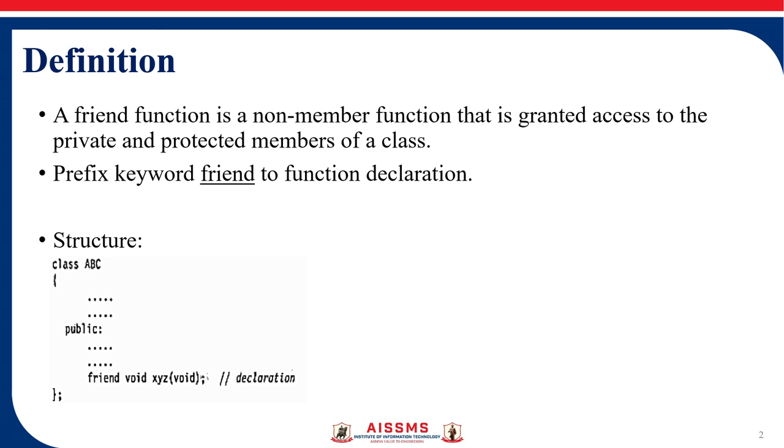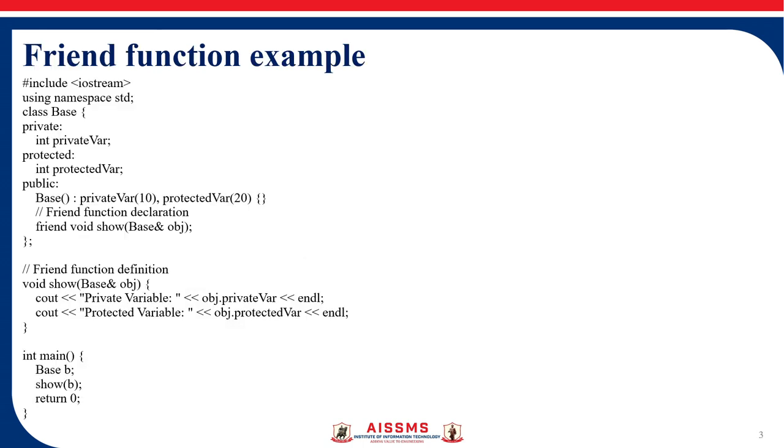So the friend function can facilitate the interaction between classes which are closely related but not connected. For example we can say that we have a linked list. That class needs to access the private member of a node class. So these are some of the scenarios where we need friend function. Now we will see one example.